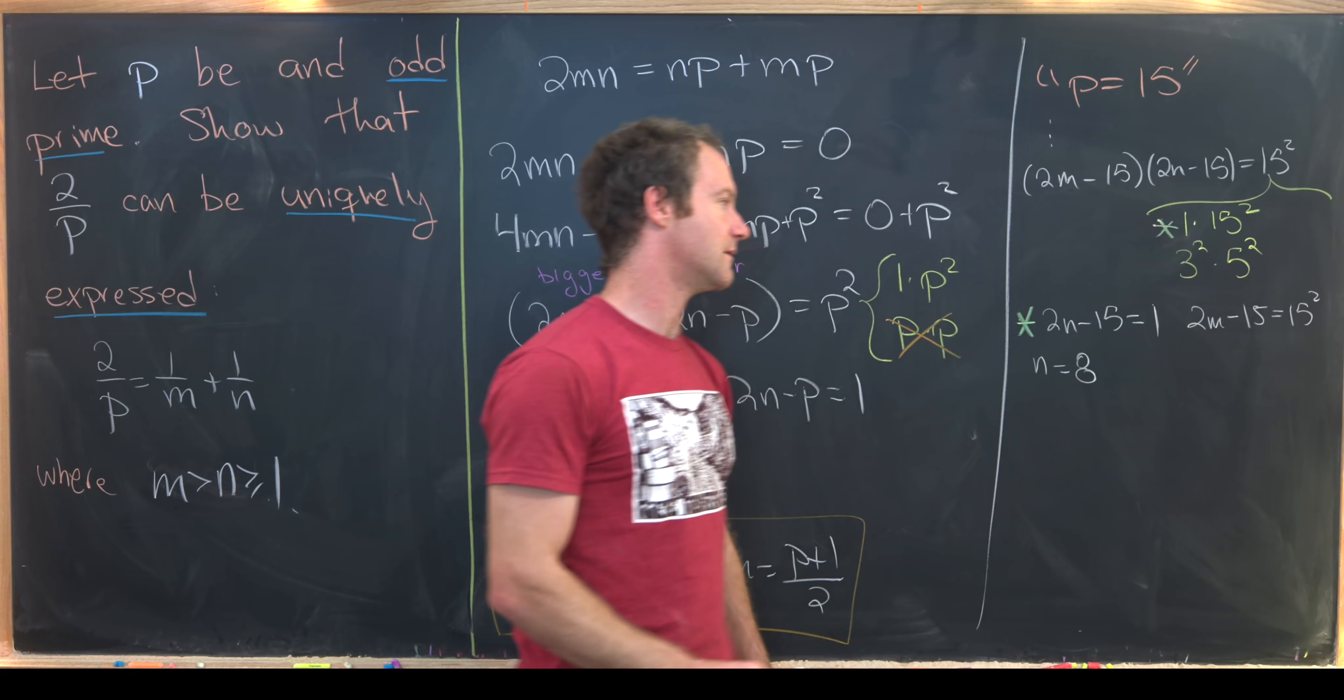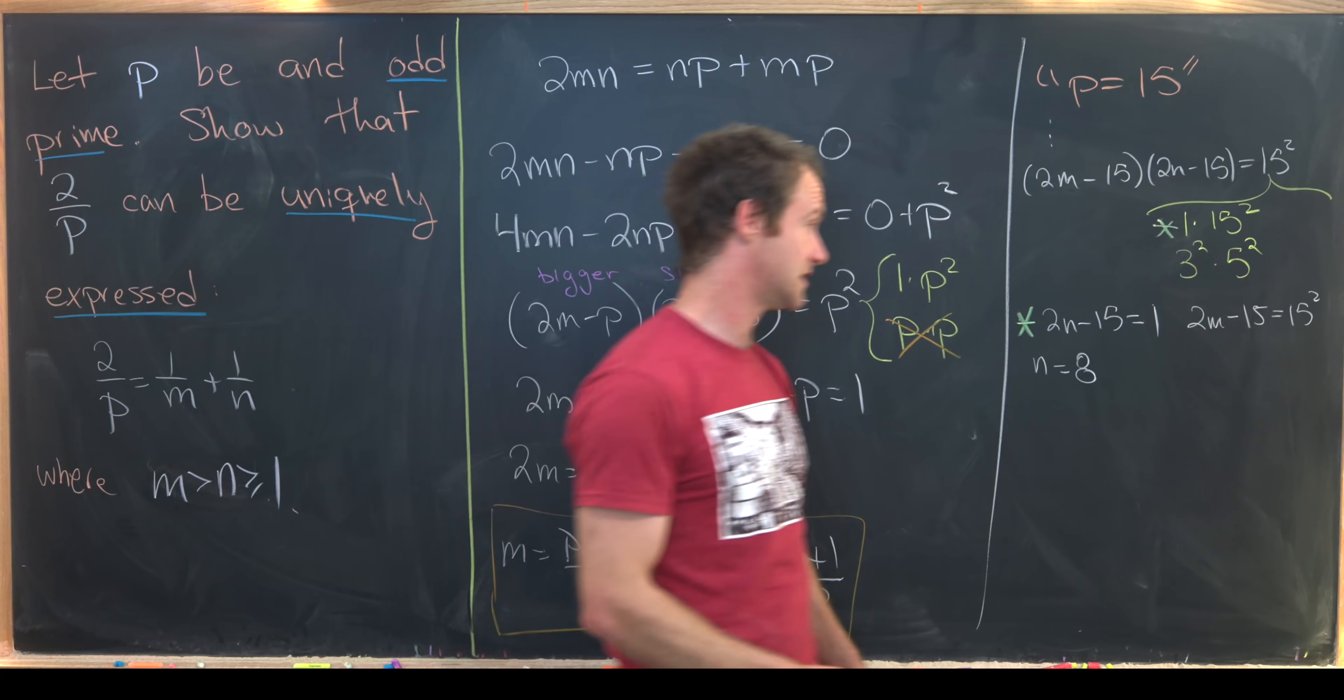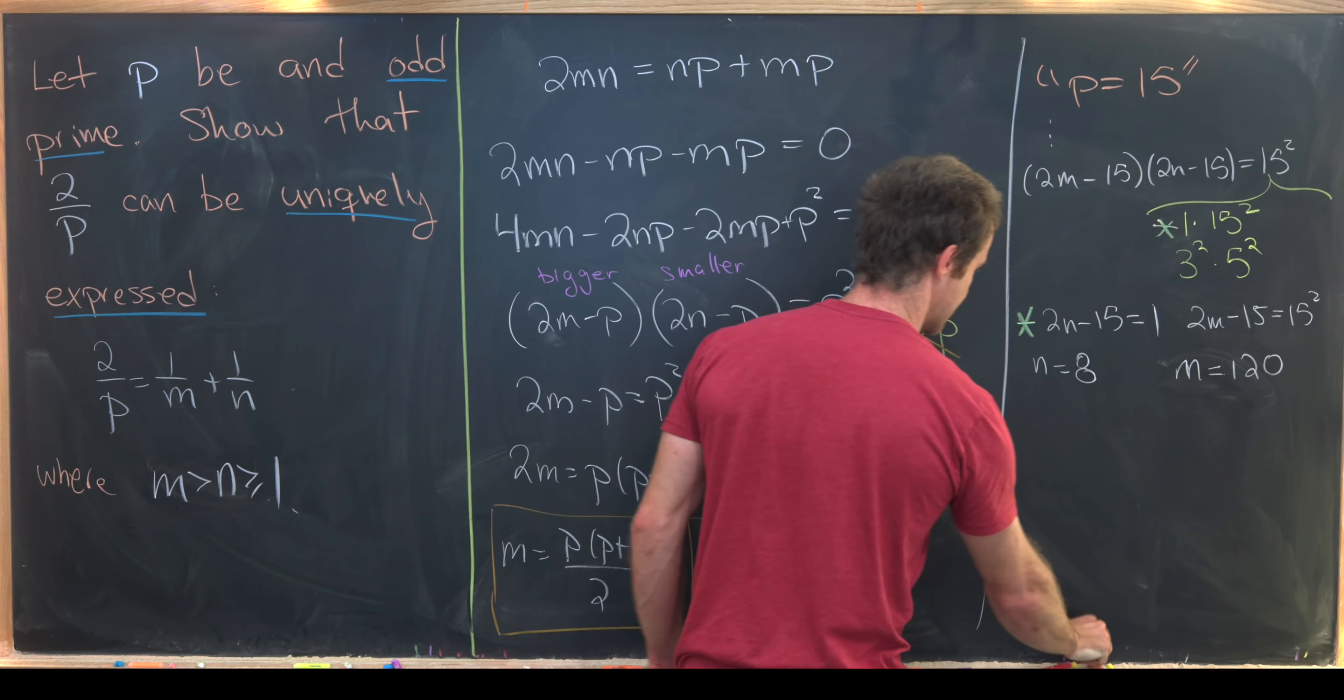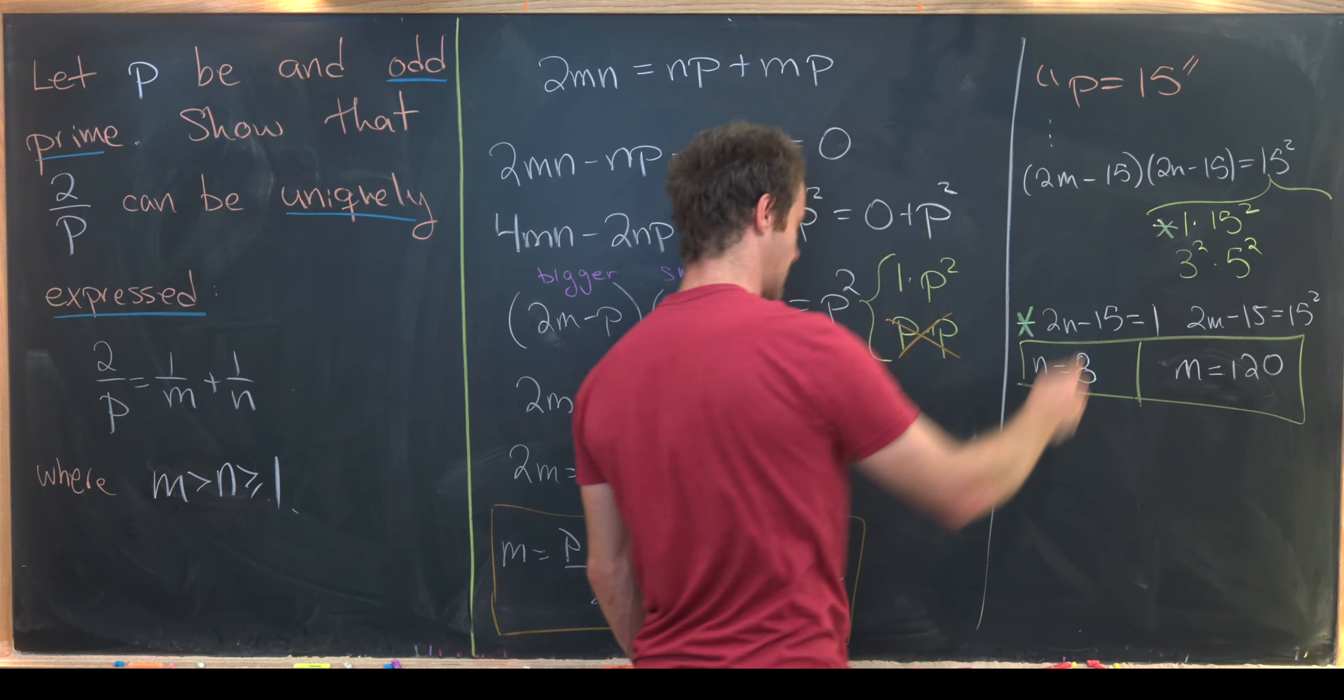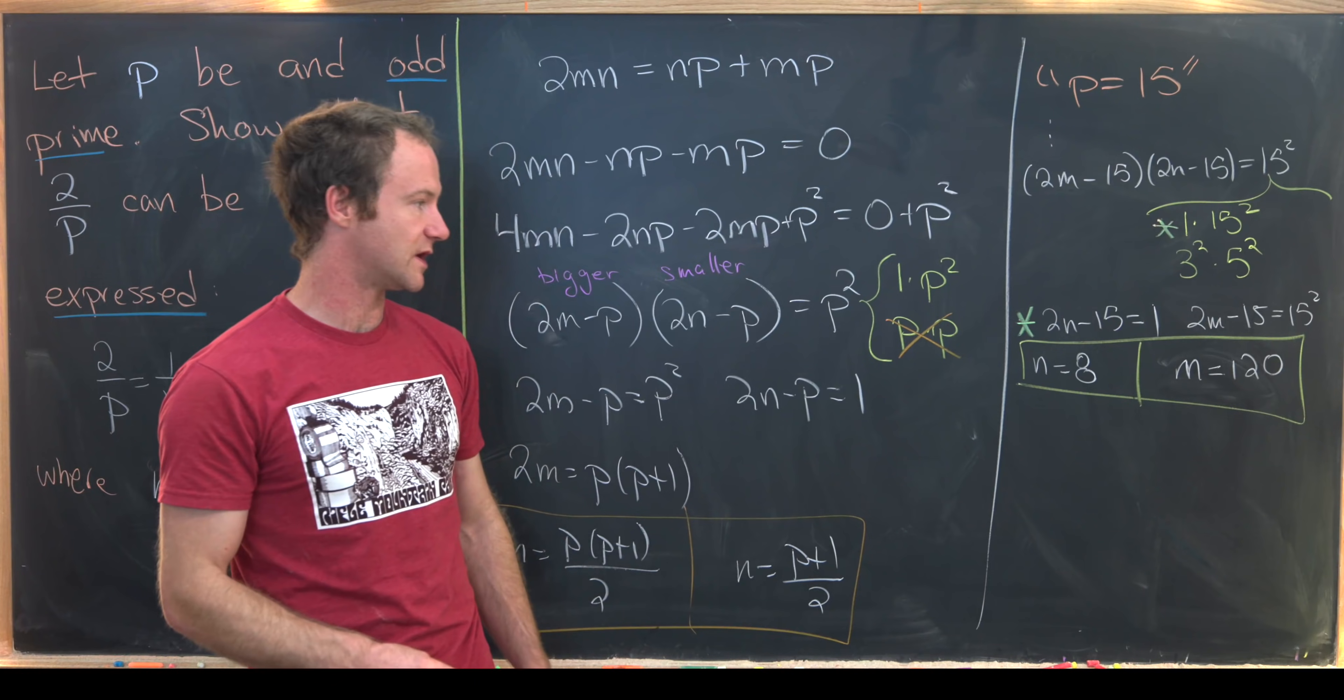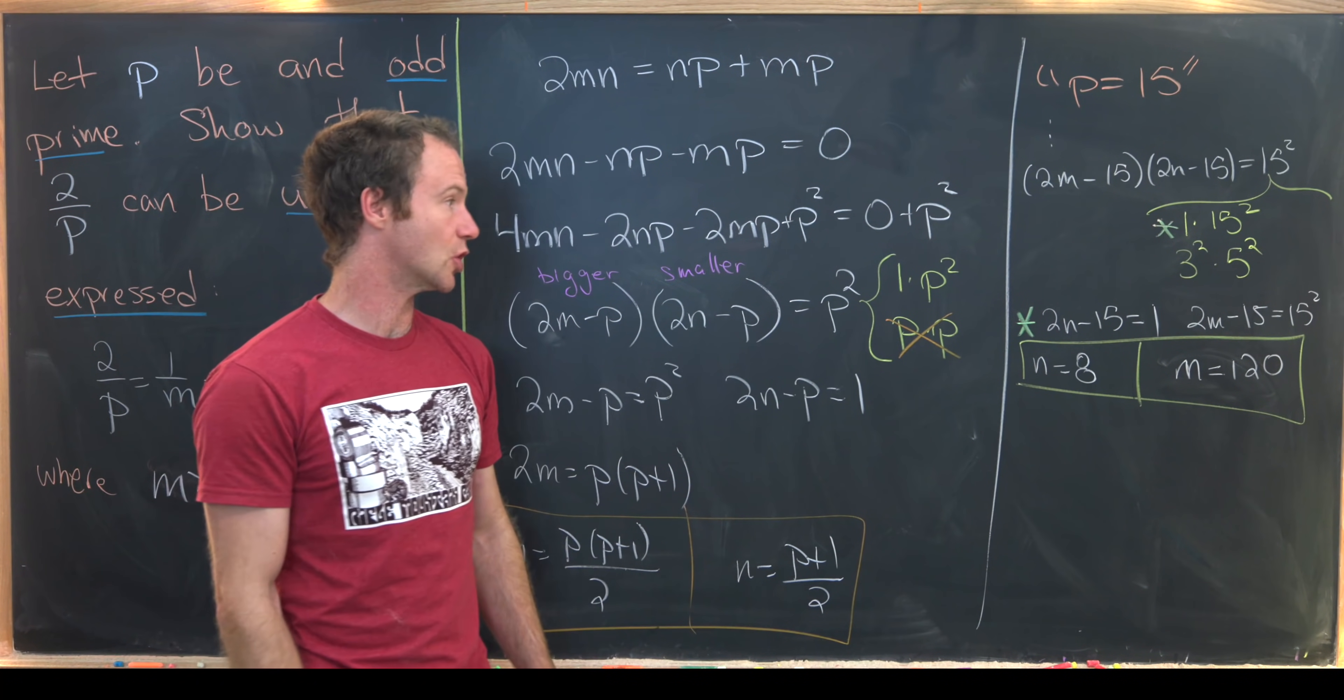This means 2M is equal to 15 times 16. But then M is equal to 15 times 8. So that means that M is equal to 120. So there we get a solution for M and N based off of this thing that's in a green star. I'll let you guys check that if you add 1/N plus 1/M we indeed get 2/15 which is the goal.